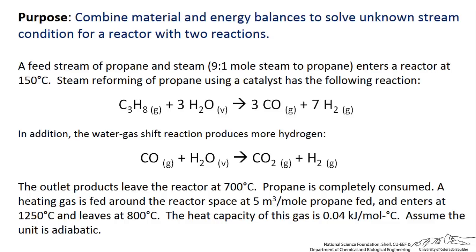To promote this reaction, a heating gas is used to heat the reactor and catalyst surfaces. This gas is fed around the reactor space at 5 m³ per mole of propane fed. It enters at 1250 degrees Celsius and leaves at 800 degrees Celsius. The heat capacity of this heating gas is 0.04 kJ per mole per degree Celsius.